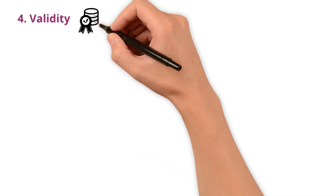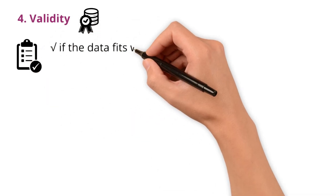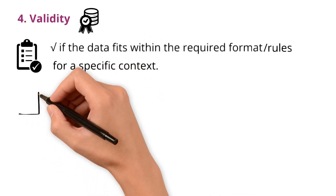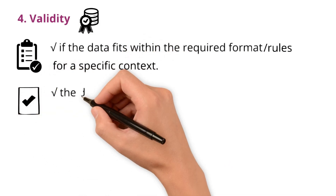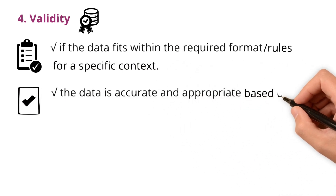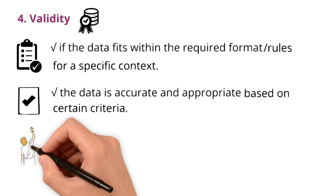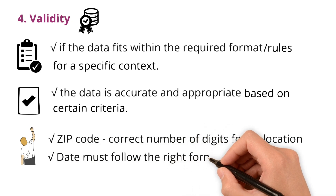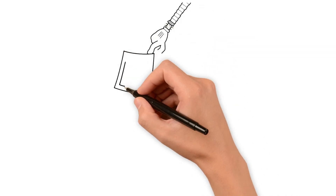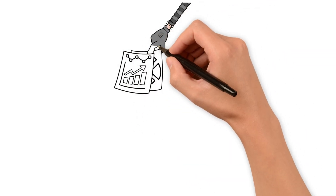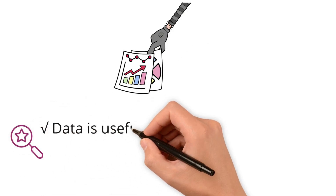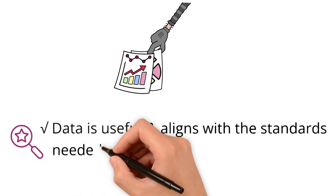Validity is a data quality dimension that checks if the data fits within the required format or rules for a specific context. In other words, it ensures that the data is accurate and appropriate based on certain criteria. For example, a zip code must have the correct number of digits for its location, or a date must follow the right format like DD/MM/YYYY. If data does not meet these rules, it's considered invalid, which can lead to errors. Validity is important because it makes sure the data is useful and aligns with the standards needed for accurate processing.